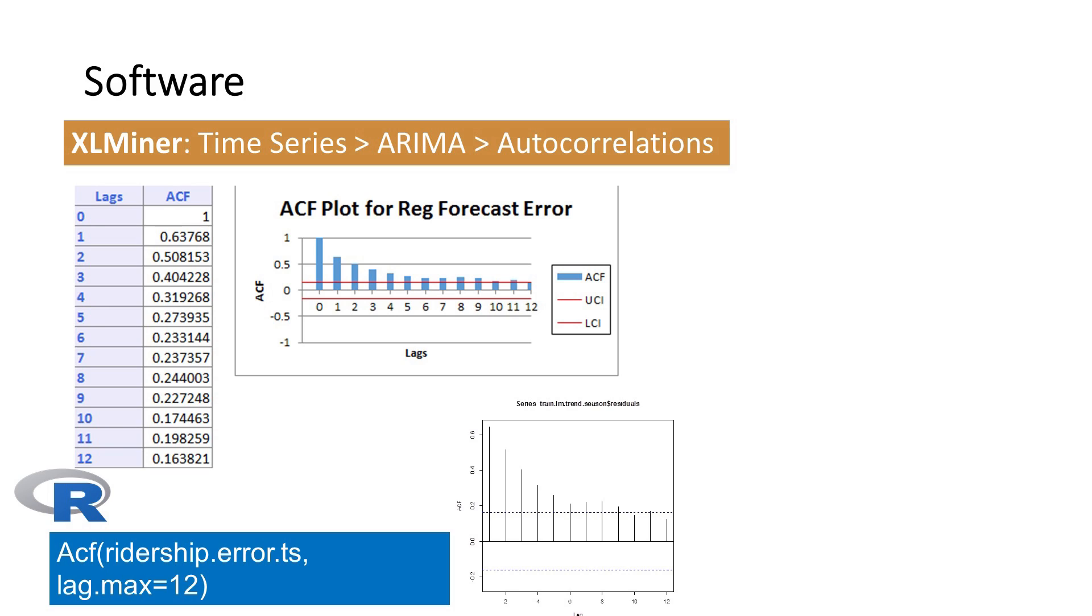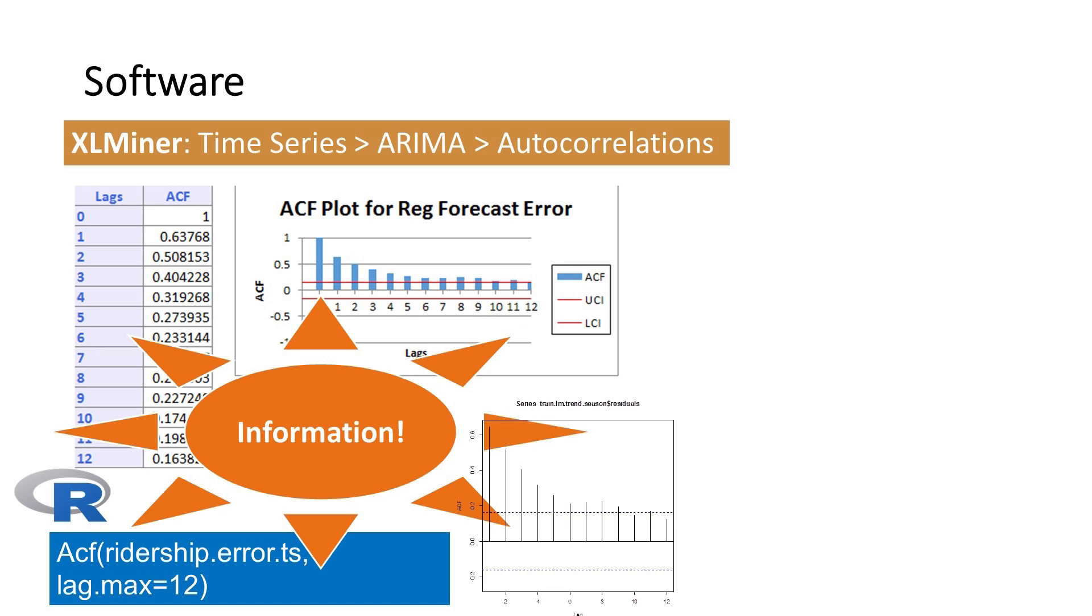In both bar charts, we see multiple bars that exceed the thresholds. The thresholds are the horizontal lines. This indicates that these autocorrelations are statistically significant. Bars within the thresholds can be considered to be zero. When we do see bars exceeding the thresholds, that is good news. It means that the series contains more information that we can model.